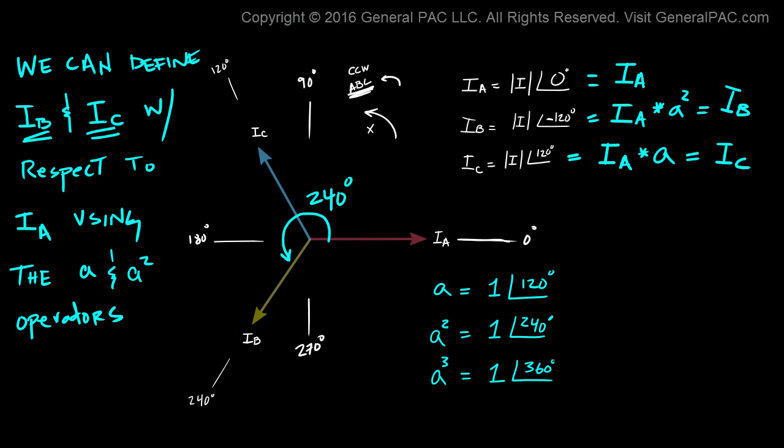A few things to keep in mind is that the A operator only works for the ABC phase sequence. And that totally makes sense from a visual perspective as well. It's only for the ABC phase sequence.